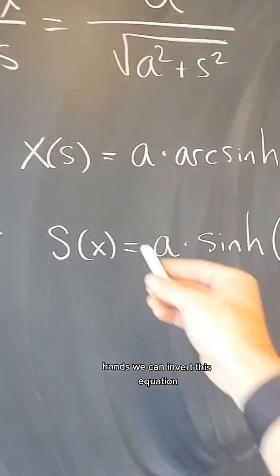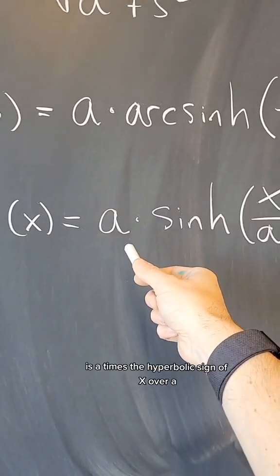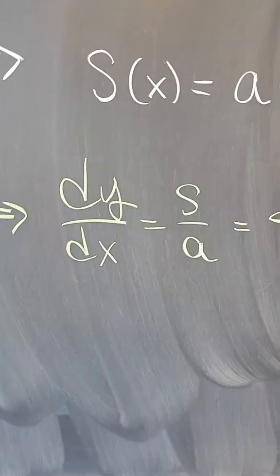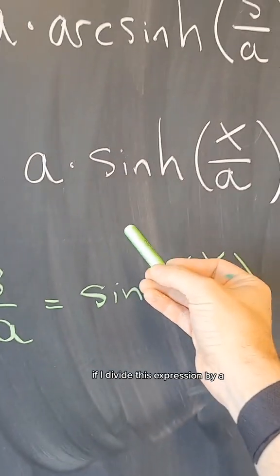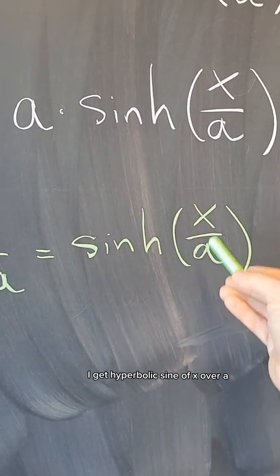Hence, we can invert this equation and now say that S, arc length with respect to X, is A times the hyperbolic sine of X over A. But since we had figured out that dy/dx was S over A, if I divide this expression by A, I get hyperbolic sine of X over A.